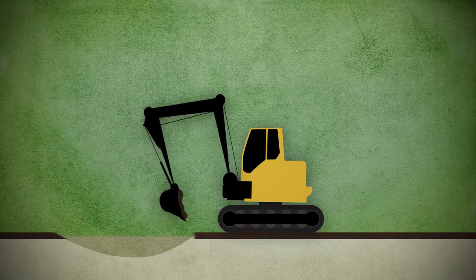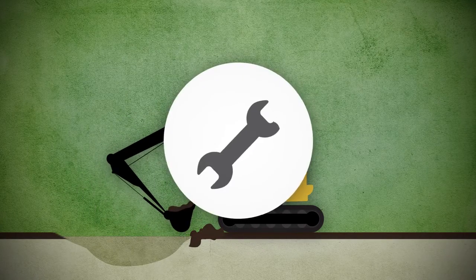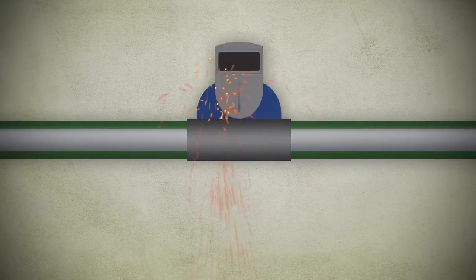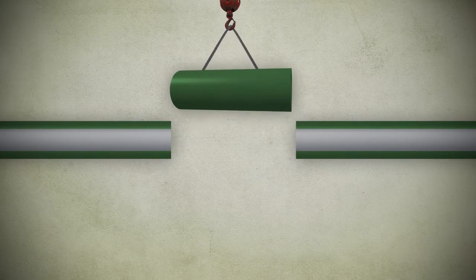The dig lets them confirm smart pig readings, evaluate the pipe's condition and do maintenance work if needed. This work may include recoding the pipe, welding a metal sleeve around the pipe, or in some cases, replacing segments of pipeline.